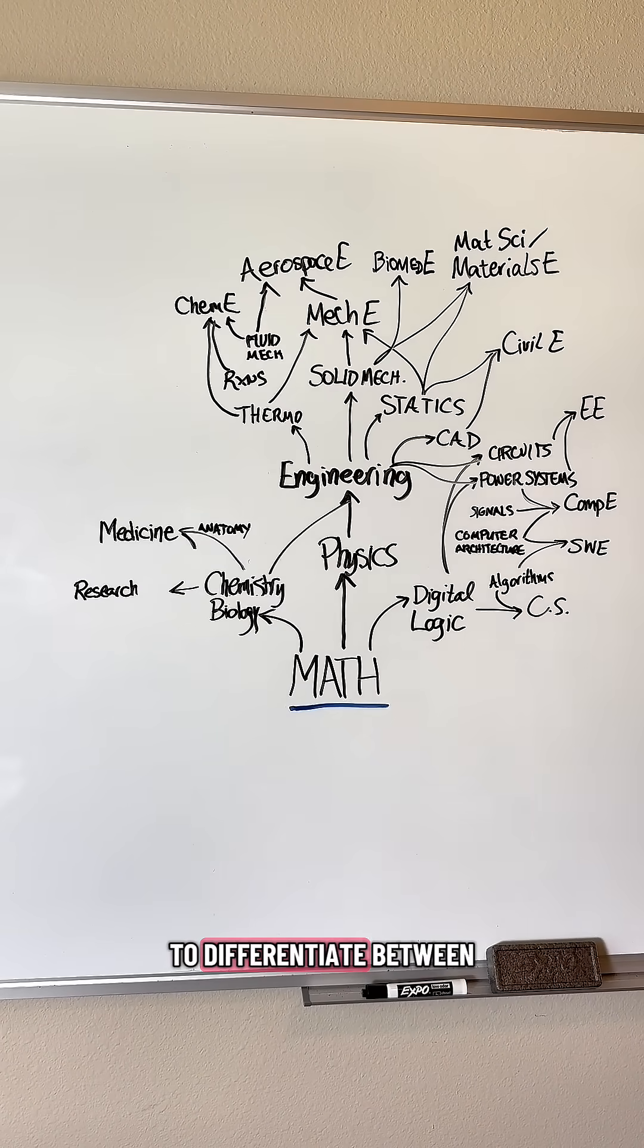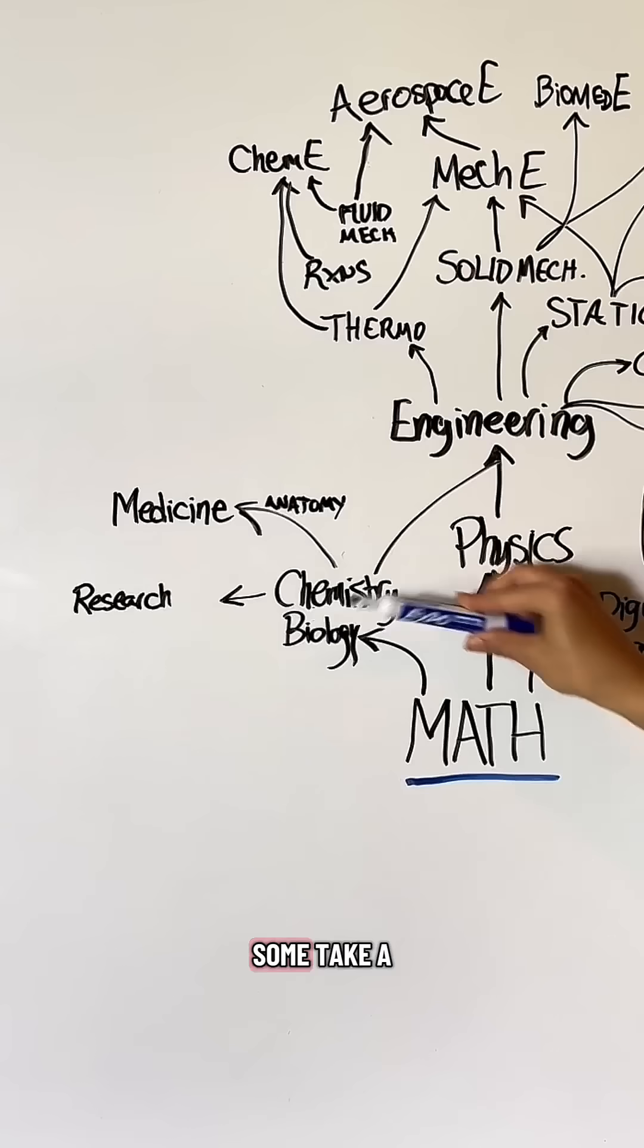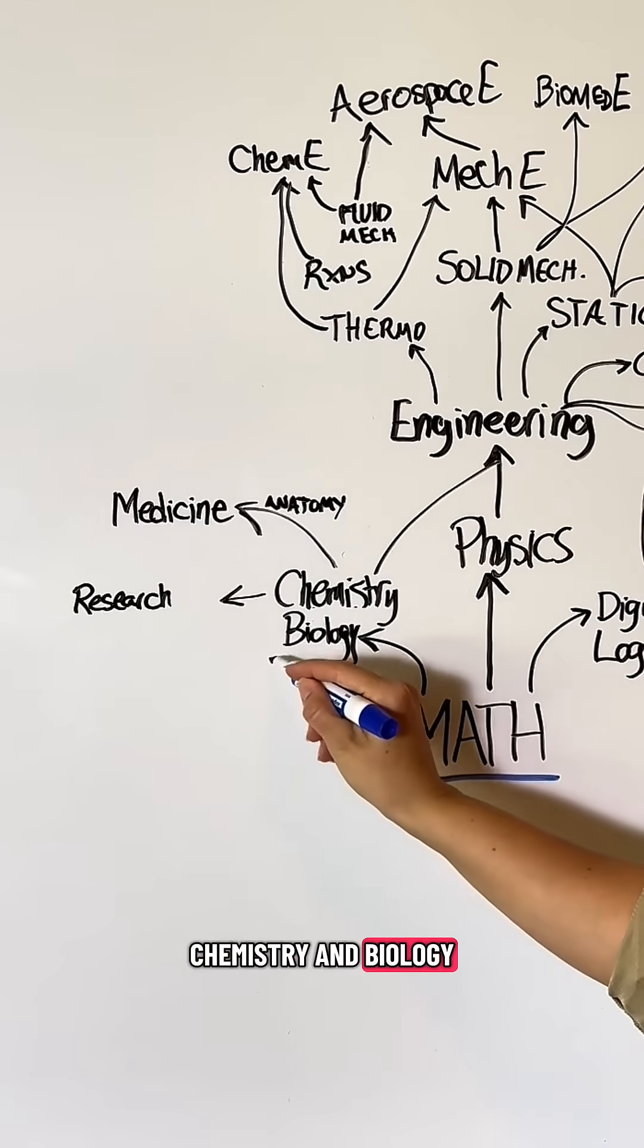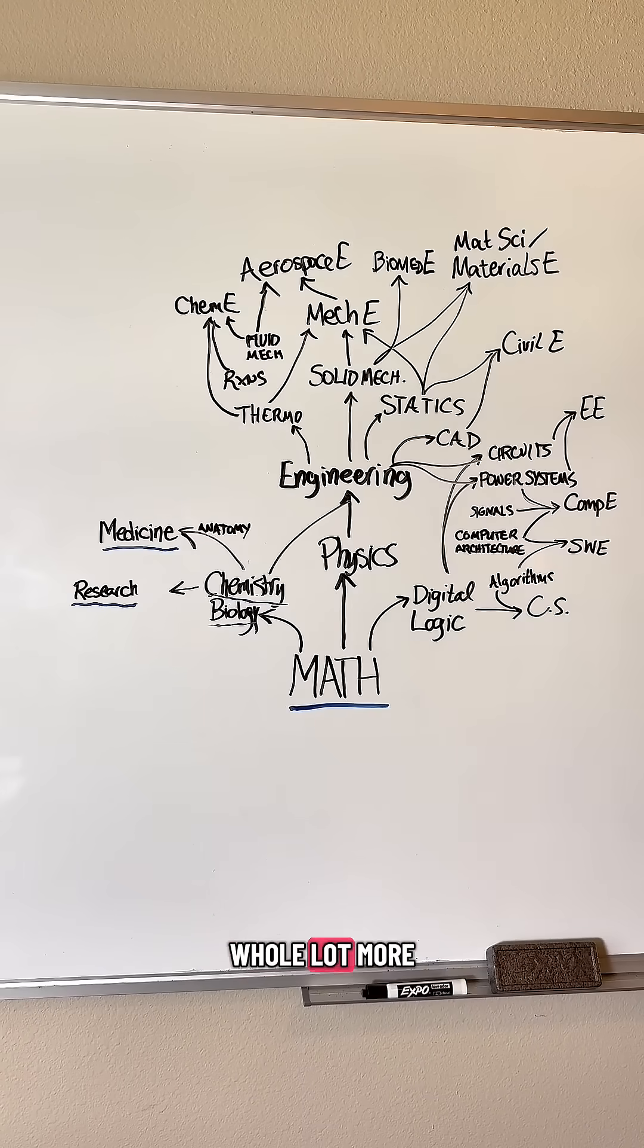We start with a foundation in math. Above that is where we start to differentiate between STEM branches. Some people choose to study math. Some take a left turn into chemistry and biology, focusing on research or potentially heading into medicine with anatomy and a whole lot more.